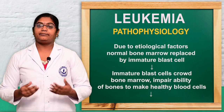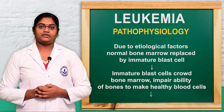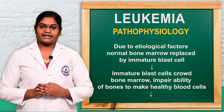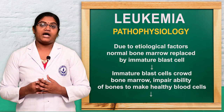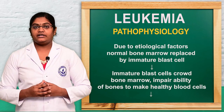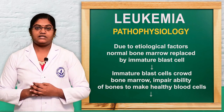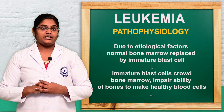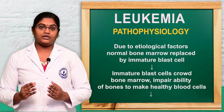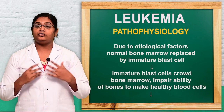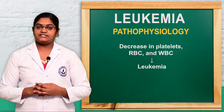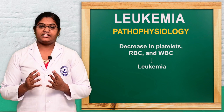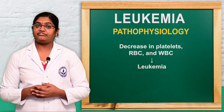Now let's discuss the pathophysiology of leukemia. Due to the etiological factors, normal bone marrow is replaced with immature bone marrow or blast cells. These immature blast cells crowd the bone marrow and impair its ability to make new blood cells, decreasing platelets, RBCs, and WBCs, ultimately leading to the development of malignancy.